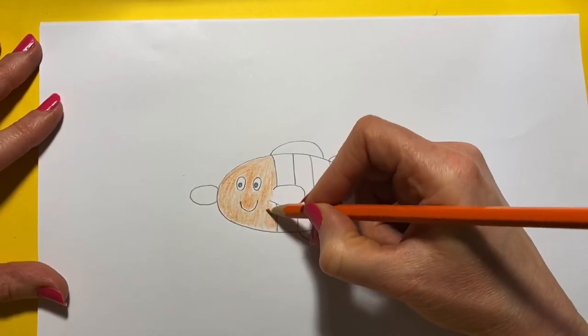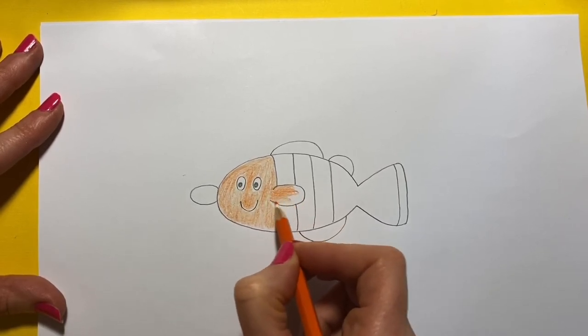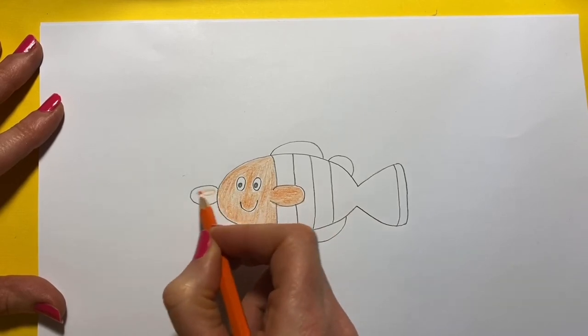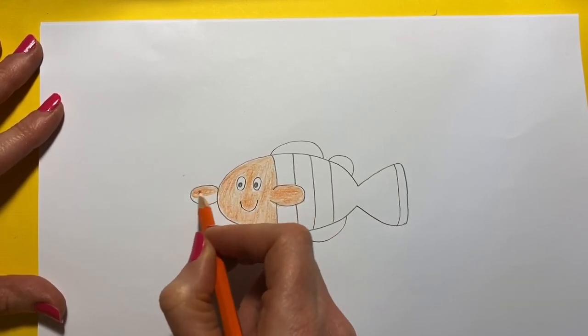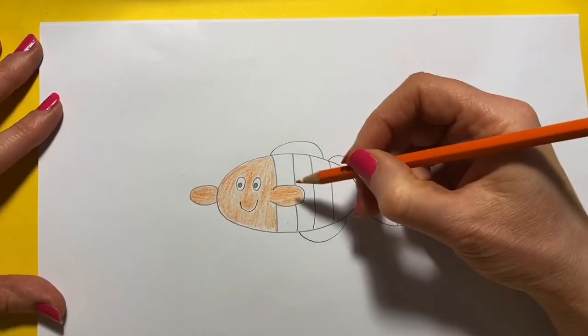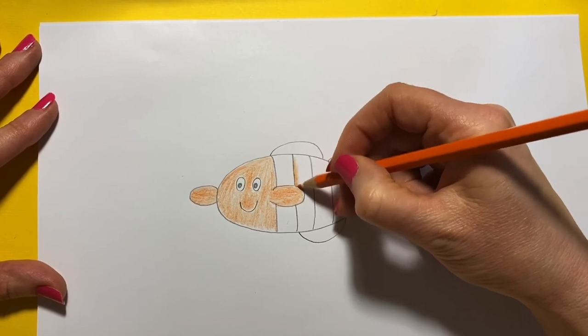There we go, and then we're going to color in our fins, our little fins that he swims with, like this. And then that stripe is going to be white, so we leave one white stripe.